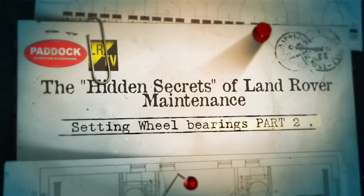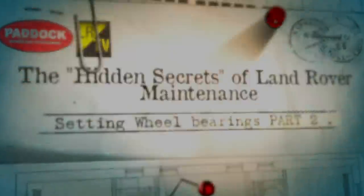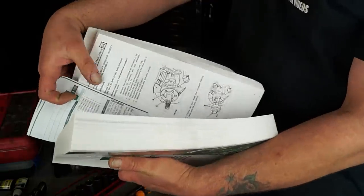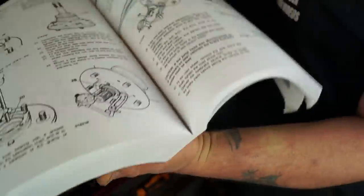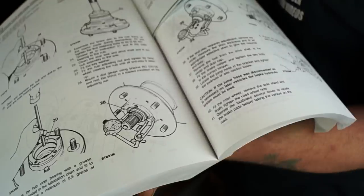Hello and welcome back to the Land Rover Toolbox videos. As promised, today this is part two and what we're going to do is look at setting up the end float as said in the workshop manual by using a dial gauge.